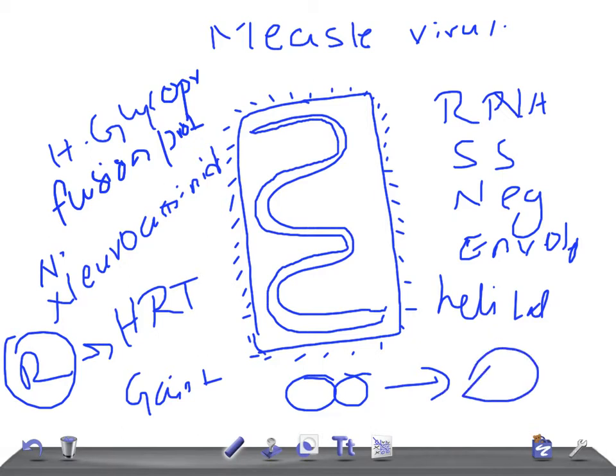The disease it causes - measles - has three C's: cough, coryza, and conjunctivitis.